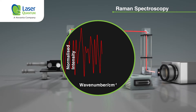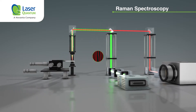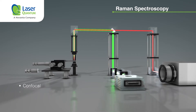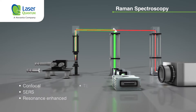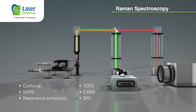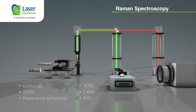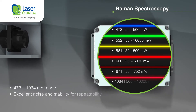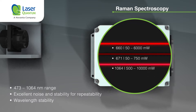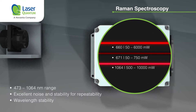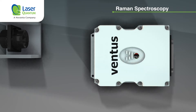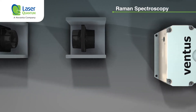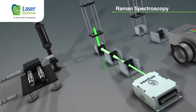There are several variants of Raman, including confocal, SERS, resonance-enhanced, TERS, CARS, and SRS. Wavelengths commonly associated with Raman range between 473 and 1064 nanometers. Laser Quantum's 660, 671, and 1064 nanometer systems are ideal longer-wavelength alternatives for any samples for which fluorescence is an issue, as specific test samples require different specifications.